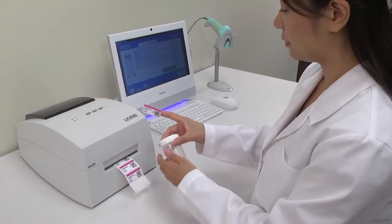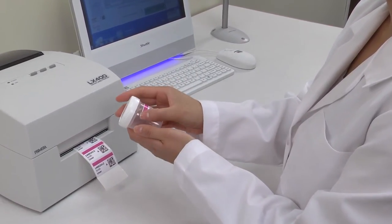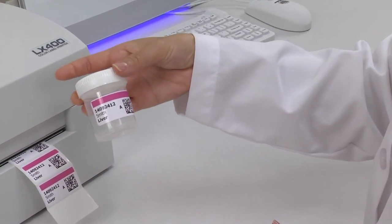Starting with Primera's LX400 color label printer, you can print both text and barcodes as well as color graphics onto labels for specimen jars or requisition forms.